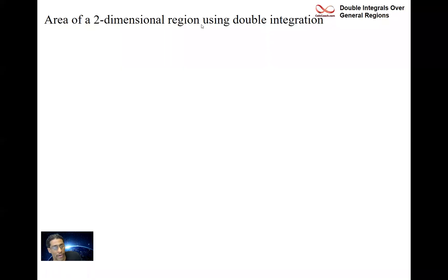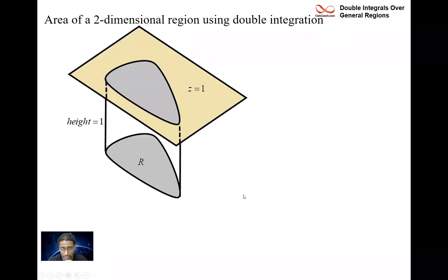All right, this is the last video in our series on double integrals over general regions. We're going to look at just some mixed bag of topics here. First up, how to find area of a two-dimensional region in the xy plane, or actually it could be any of the coordinate planes, using double integration. You see, when the integrand is a one, then you're actually finding area. Let me explain.